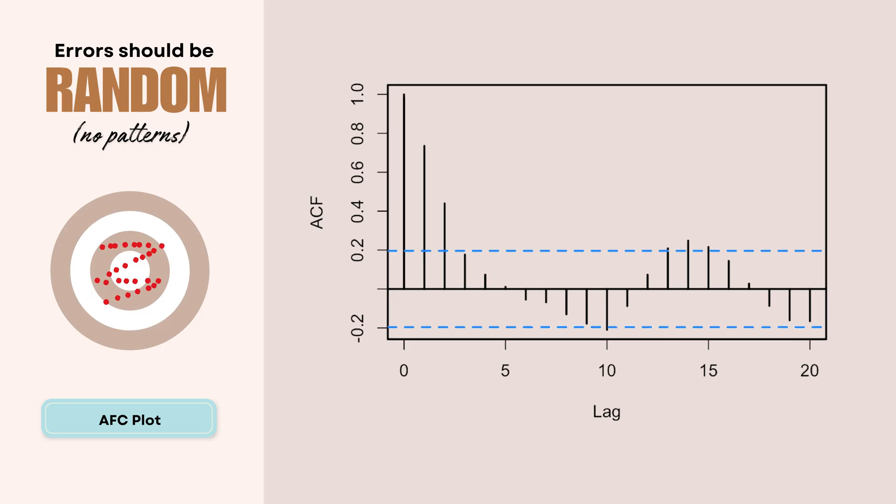Now let's break down what an ACF plot looks like. So the vertical bars here show correlation strength, and those range from negative one to one. The horizontal axis shows the time lags, which is how far apart we're comparing our errors. These blue dashed lines, there are 95% confidence bounds.